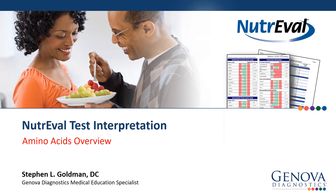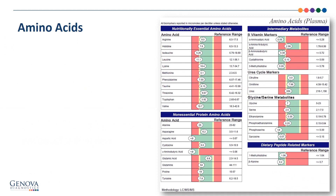Now we begin amino acids. Here's our amino acids page. In this case, it's an amino acid from plasma. Remember, there's an option to measure in plasma or first morning void. There are basically two types of NutraVal, and this is a dividing point. There's a NutraVal with first morning void amino acids, and the NutraVal with plasma amino acids.